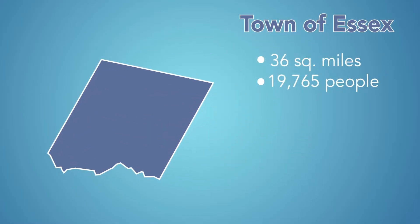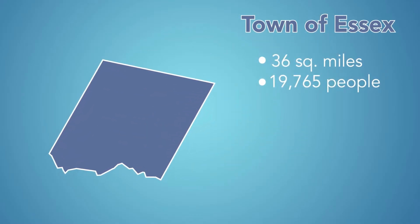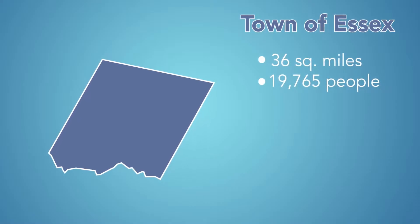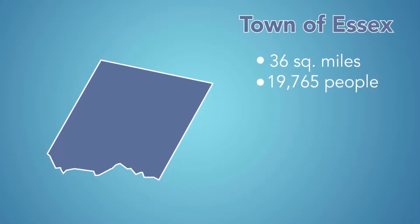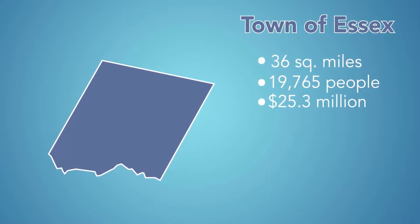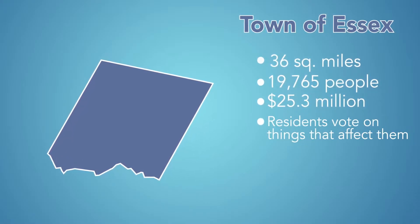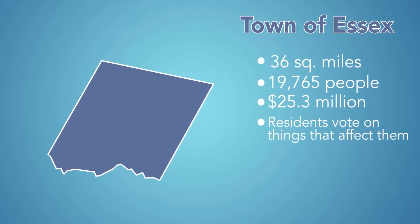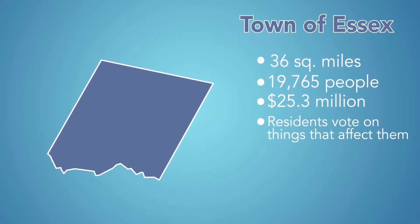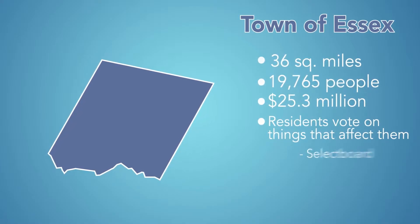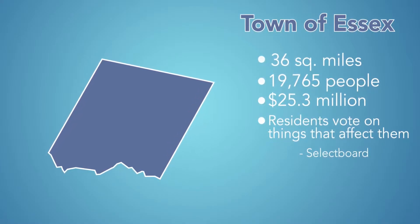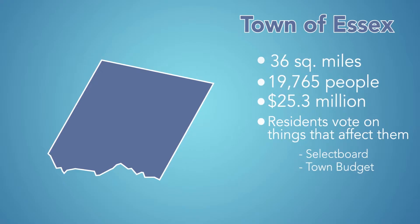The town of Essex has a population of 19,765 people. It has a grand list — the total assessed value of all properties — of 25 million. Every resident of the town of Essex gets to vote on the things that affect them, like electing the five-member governing body, the Essex Select Board, and voting on the town budget.